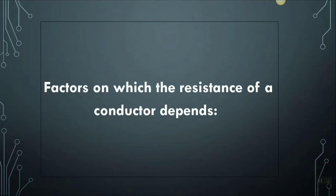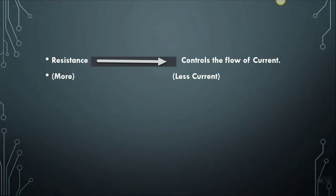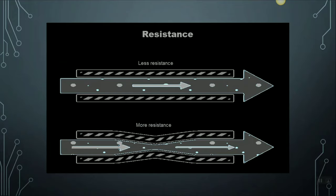As we have understood Ohm's law, let's move forward to the next topic — that is, the factors on which the resistance of a conductor depends. We know that resistance in an electric circuit controls the flow of current. If it is more, the current reading will be lower, and if it is less, the current reading will be higher. It is inversely proportional to the current. Let's do a small activity to understand this.